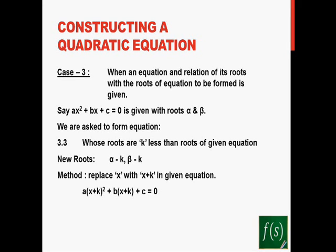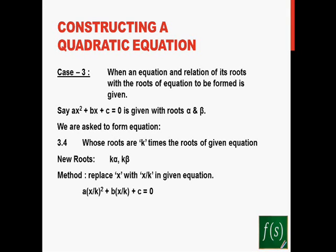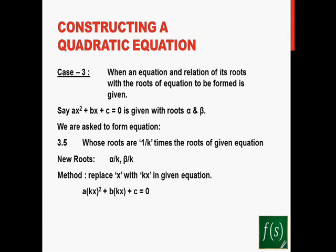Similarly, if the roots are k less — alpha minus k and beta minus k — you replace x with (x plus k) in the given equation. For roots that are k times the roots of the given equation, you replace x with x/k. And if the roots of the new equation are 1/k times the roots of the given equation, you replace x with kx to get the new equation.